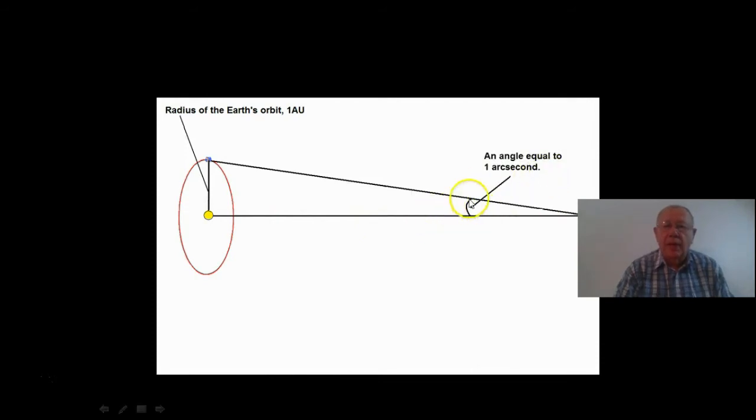And the symbol that's given for that is the symbol p. And that there would be the distance, the distance of one parsec. The symbol for parsecs is pc.